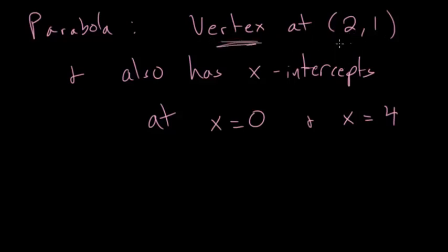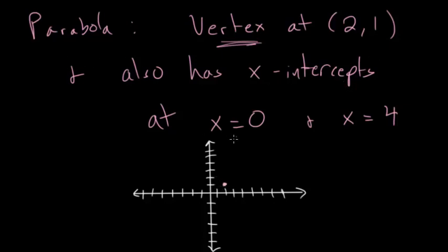And the vertex, remember, is either the highest or the lowest point. So first we're going to plot that. So let me draw some coordinate axes. And with this coordinate plane, we can start plotting points. So we know the vertex is at (2, 1). So that would be this point here. And we know that this parabola has x-intercepts at x is equal to 0 and x is equal to 4. So the x-intercepts, that's where it crosses this x-axis here. And since the vertex is always either the highest or the lowest point, we know in this case it has to be the highest point because there are two points below it.